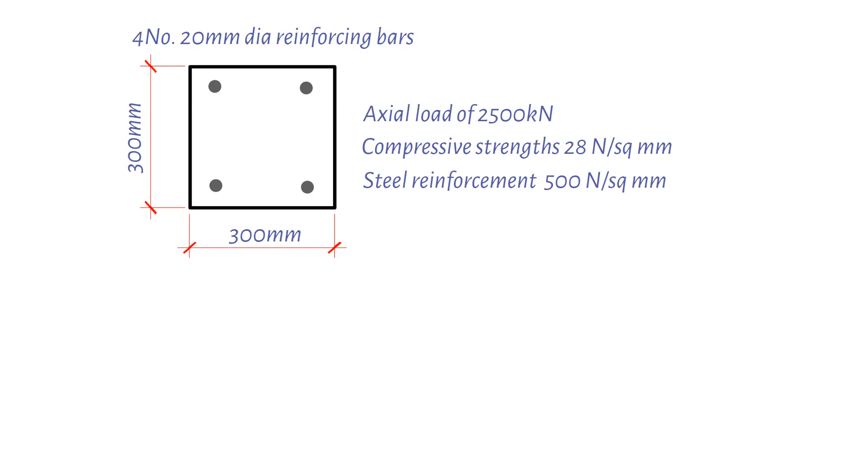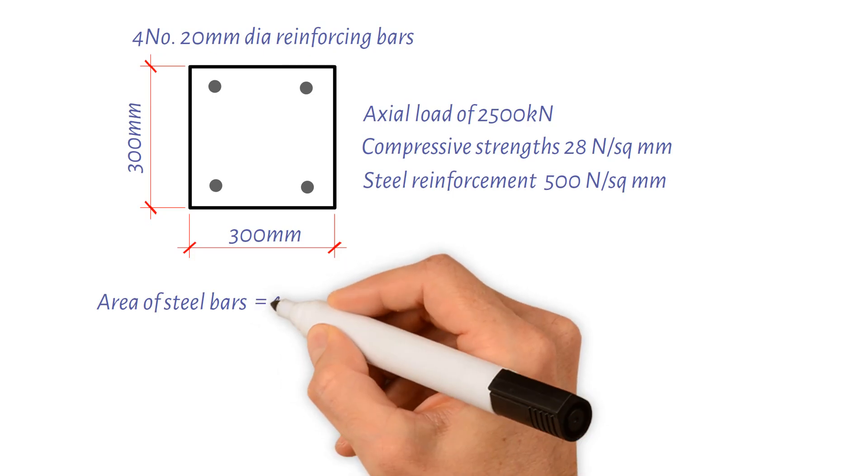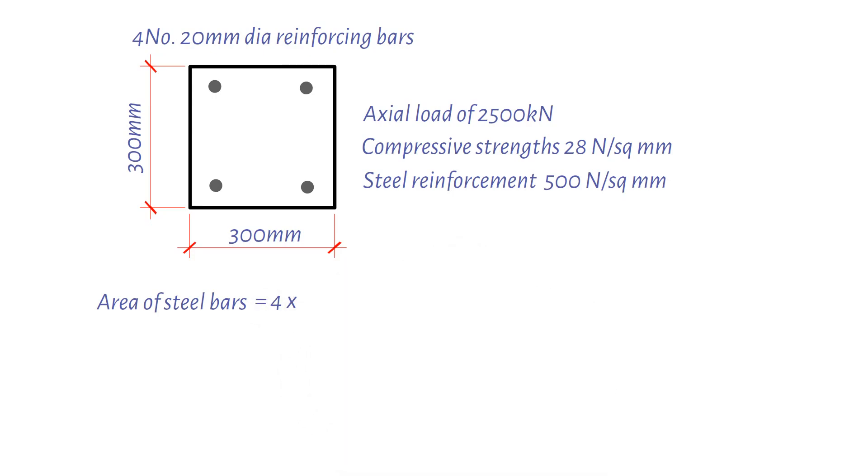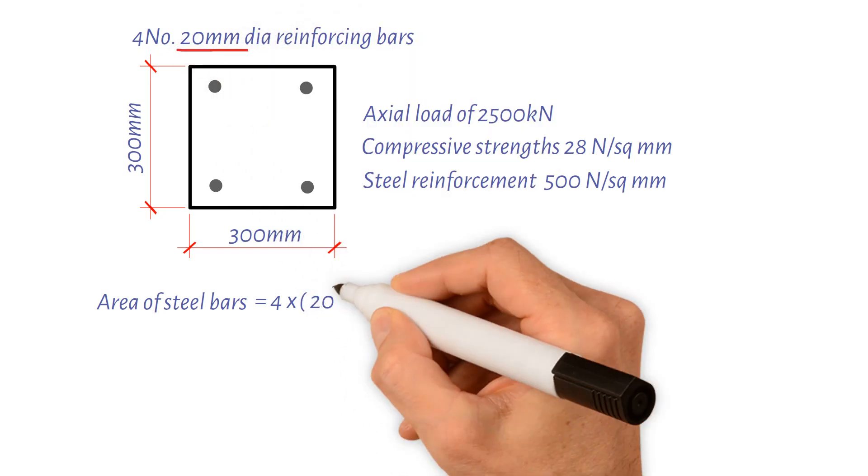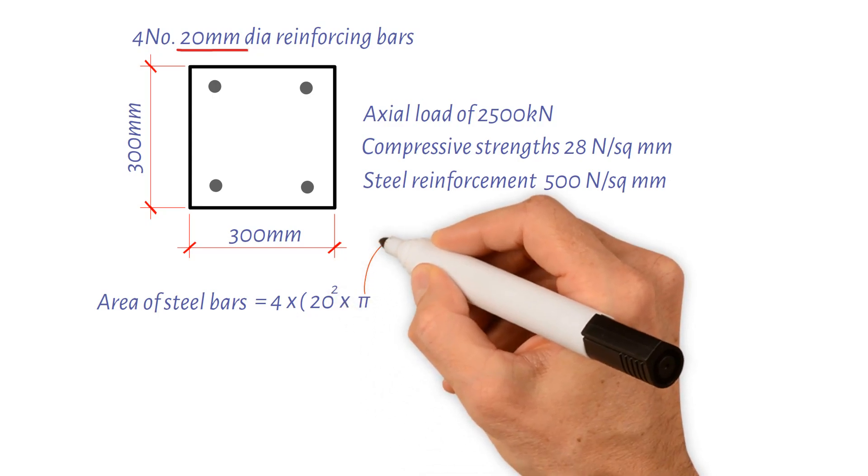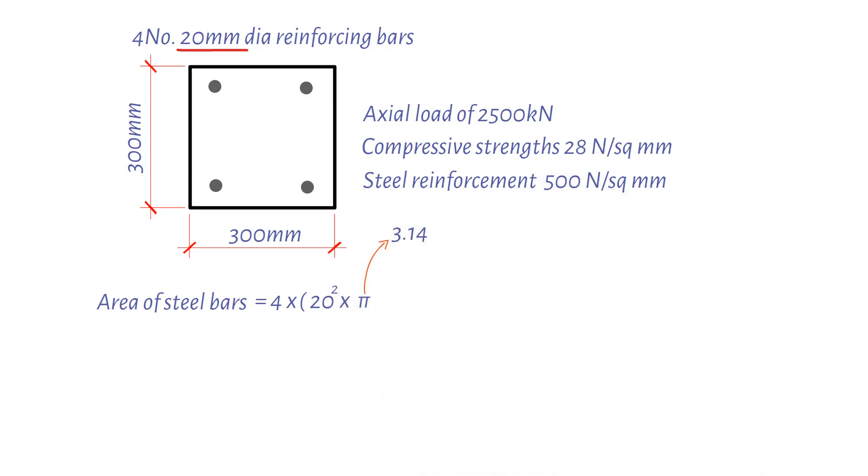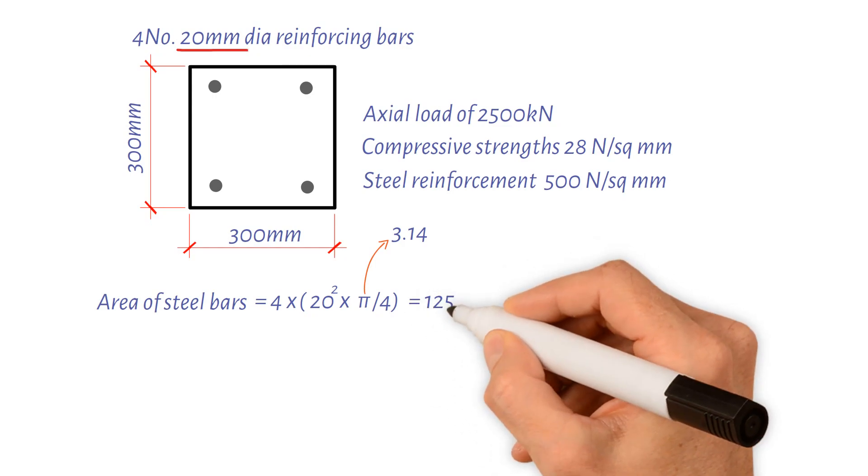First, let's calculate the area of steel bars, which equals 4, the number of bars, multiplied by the area of each individual bar, which is the area of the circle that is 20 millimeters diameter squared, multiplied by pi 3.14, then divided by 4. So the area of steel bars is 1,256 square millimeters.